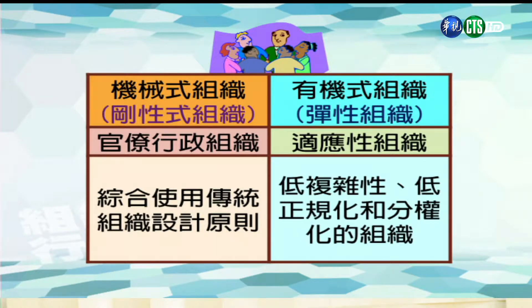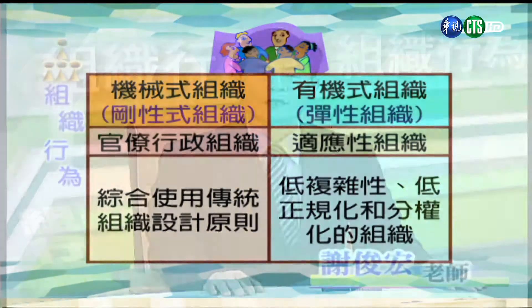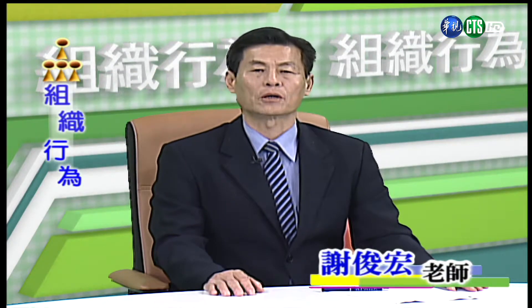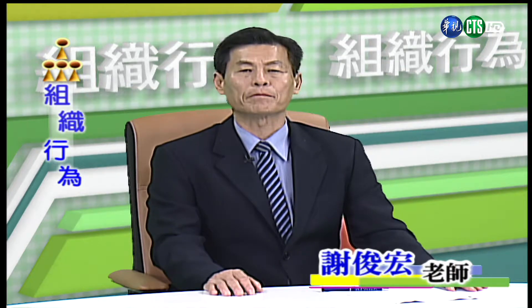一般而言，机械式的组织又称为刚性式组织，也称为官僚行政组织，是综合使用传统组织设计原则的自然产物。而有机式的组织又称为弹性组织，也称为适应性组织，属于低复杂性、低正规化以及分权化的组织，是一种松散、灵活、具有高度适应性的形态，因为不具有标准化的工作与规则条例，所以是一种松散的结构，能够根据需要迅速做出调整。